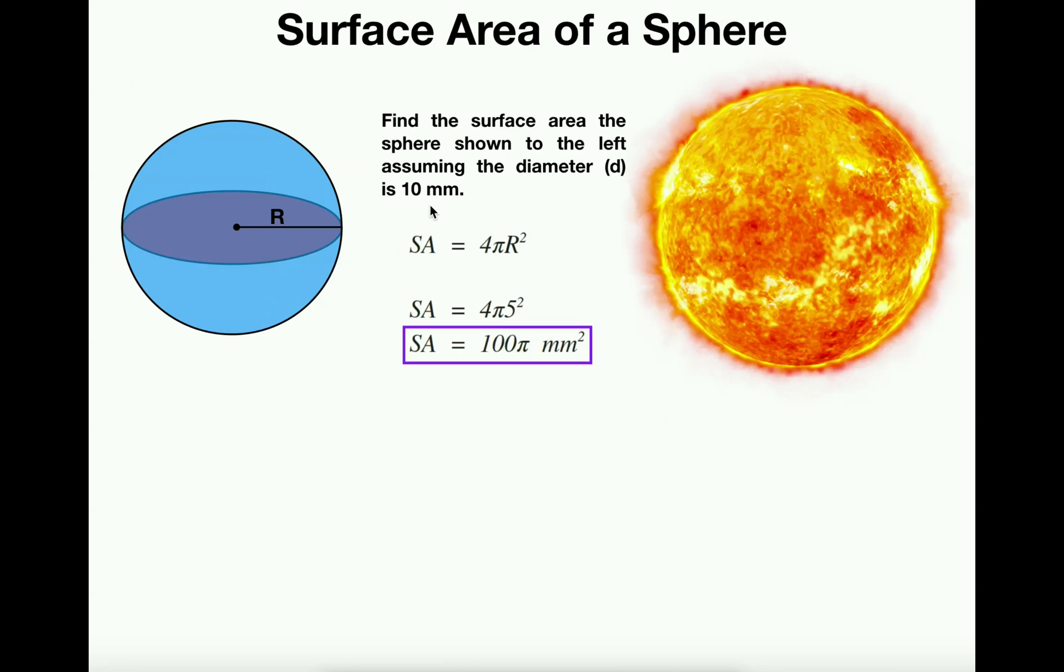And so we can just plug in a radius of 5 into the surface area formula for the sphere. And unfortunately, like volume, we had 4/3πr³. This one is also not really that intuitive of a formula, so you're better off just memorizing it.